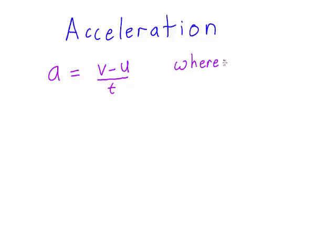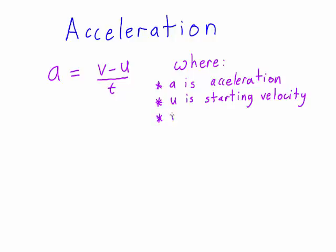Where a is the acceleration, u is the velocity at the start of the time interval, v is the final velocity at the end of the time interval, and t is the amount of time that has passed.